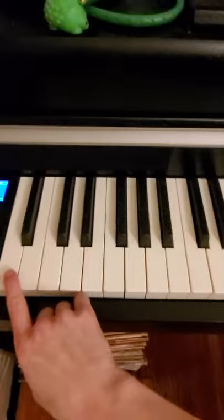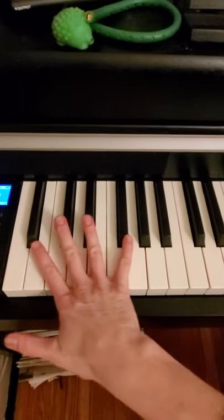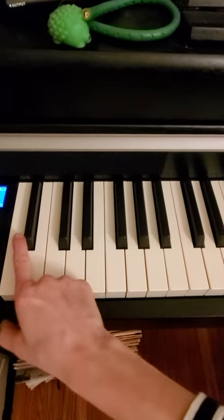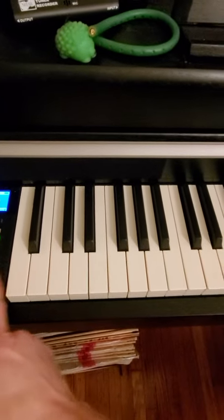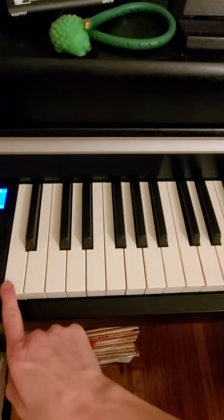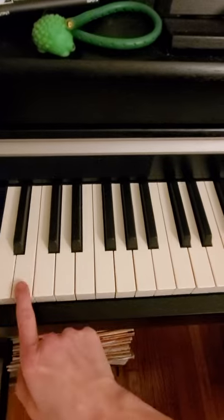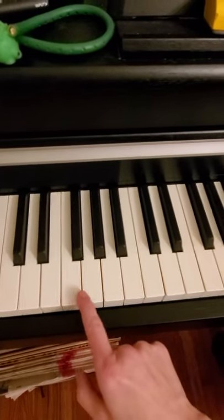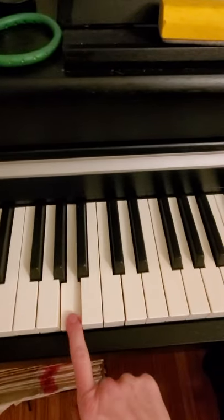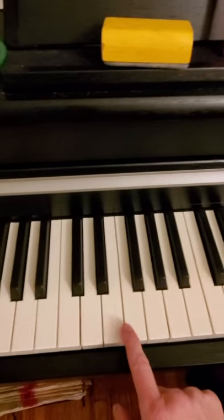On most pianos, down here at the bottom, we actually start with an A if the setup is like this. Some of the grand pianos have a few extra keys down there, but mine actually starts with A, B, C, D, E, F, G. Then we start over with A, B, C, D, E, F, G, A, B, C, D, E, F, G, and so forth.